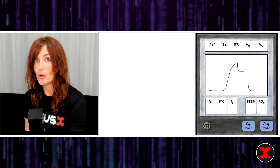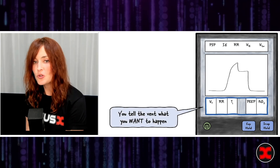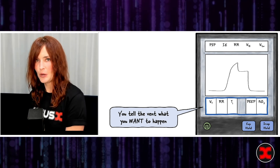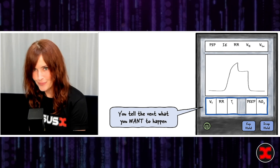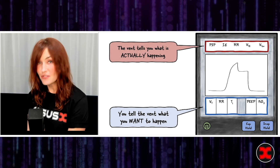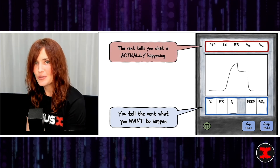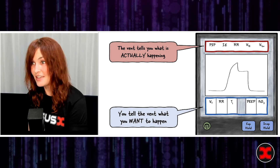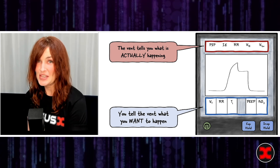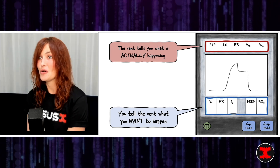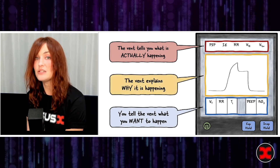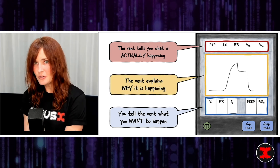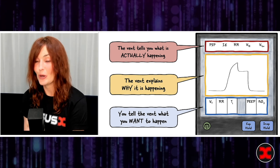The three core components are as follows. The first is the section where you tell the ventilator what you want to happen. The second is where the ventilator tells you what's actually happening — because with ventilators, as in life, what you want to happen and what's actually happening are not always the same thing. And finally, there's the most important section where the ventilator tells you why things are happening.